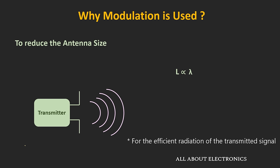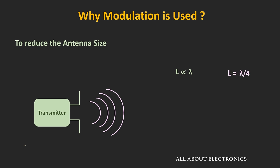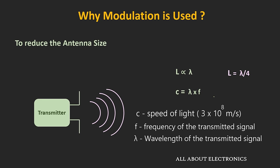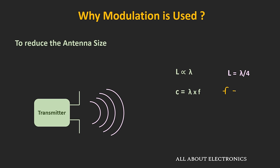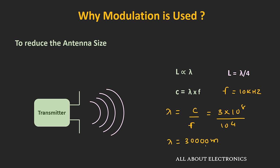Let's say the size of the antenna is equal to λ/4. The relationship between frequency and wavelength is given by λ = c/f. For example, if the transmitted signal has a frequency of 10 kHz, then its wavelength will be equal to 3×10⁸ m/s divided by 10 kHz, which comes out to 30,000 meters. If the antenna size is a quarter of the wavelength, then the length of the antenna will be around 7,500 meters — which is actually impractical.